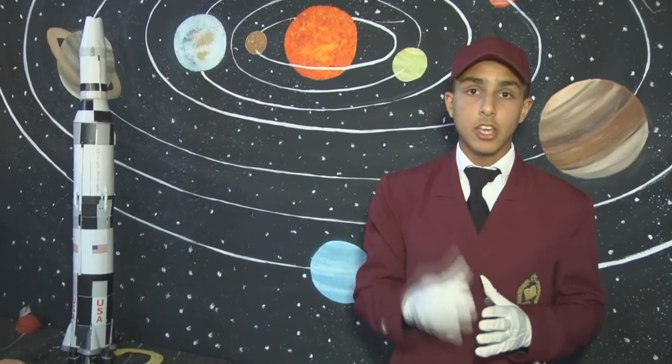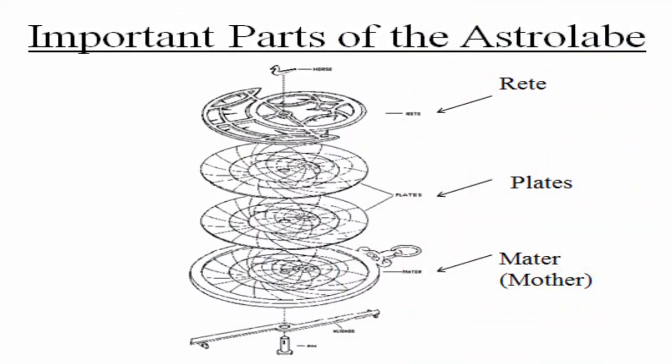The astrolabe contains, first, the rete, which is a net or a star map full of circle axes presenting the zodiac signs.